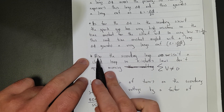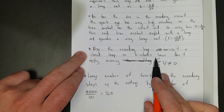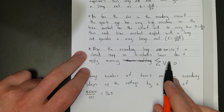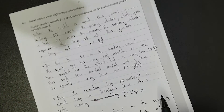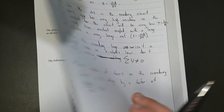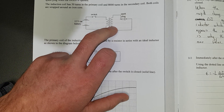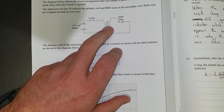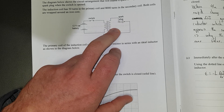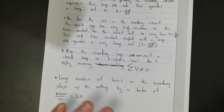Another side note: the secondary loop isn't a closed loop, so Kirchhoff's laws don't apply, meaning the sum of the voltages doesn't have to equal zero. So the voltages in the secondary circuit don't have to add to zero.